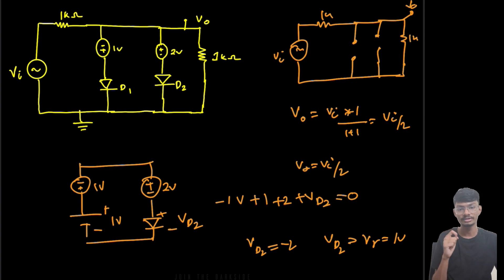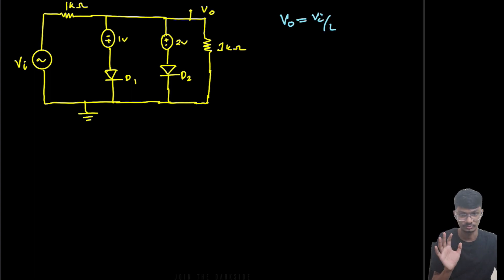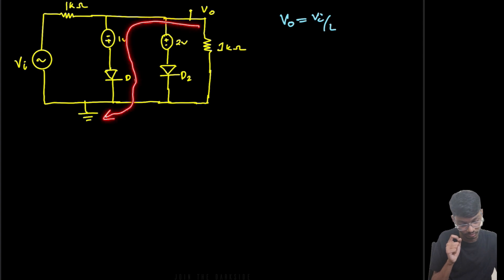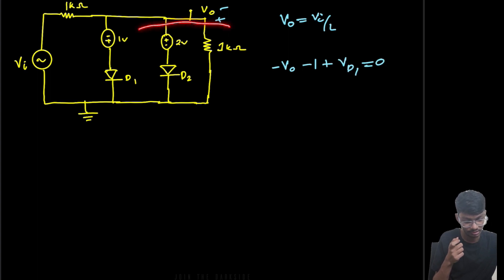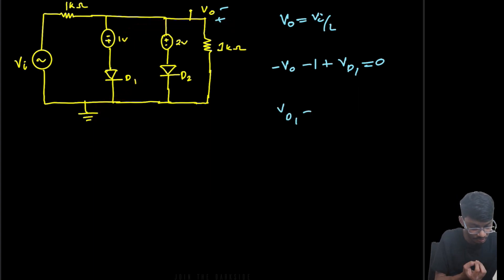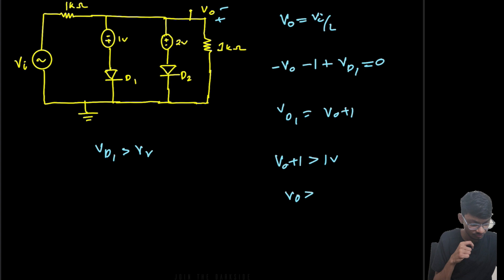Now let's find the condition for D1 to turn on. We know Vo = Vi/2 when both diodes are off. Applying KVL through the loop containing D1: minus Vo minus 1 plus VD1 = 0, so VD1 = Vo + 1. For D1 to turn on, VD1 must be greater than Vγ = 1 volt, so Vo + 1 > 1, meaning Vo must be greater than 0.